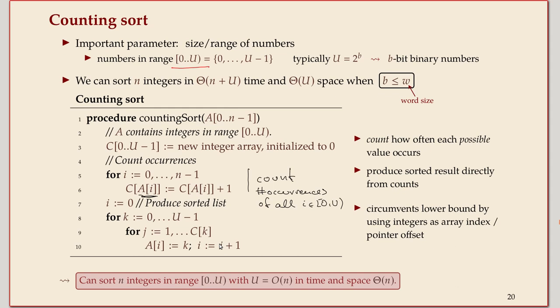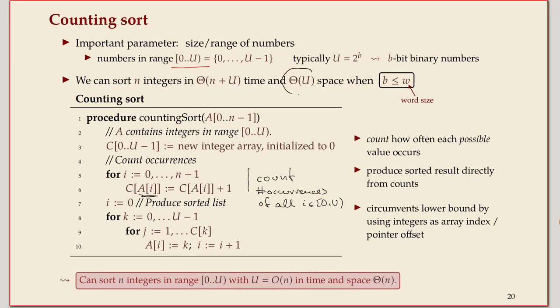As I said, it depends a lot if this is a reasonable method to go for or not. If u is 2 to the 64, forget it. If u is 2 to the 32, it's expensive but might be feasible. And if u is a good bit smaller than that, go for it because it will probably be faster than any comparison-based method.